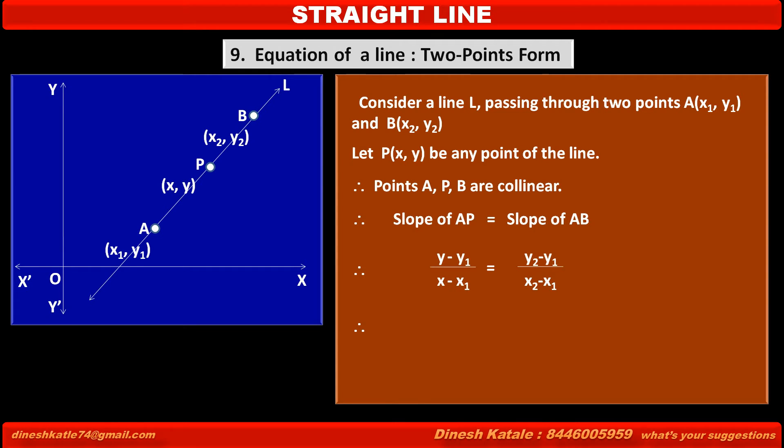By using alternando, that is, by taking the ratio of numerators equal to the ratio of denominators, we get (y - y₁)/(y₂ - y₁) = (x - x₁)/(x₂ - x₁).